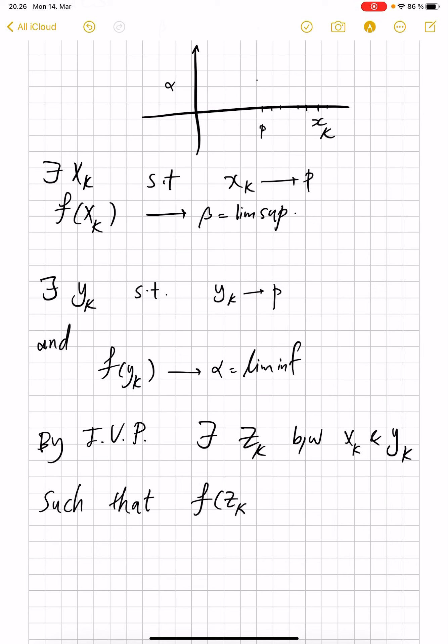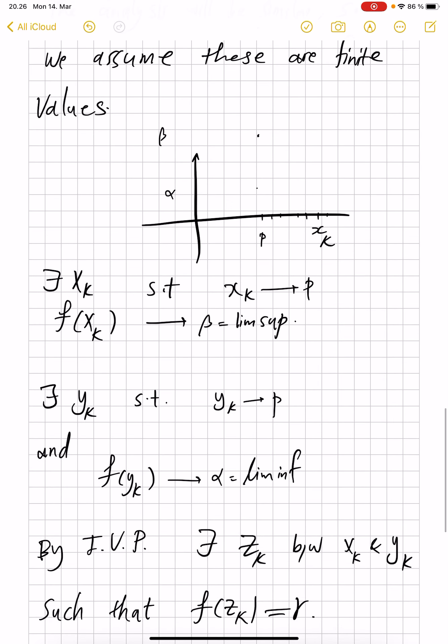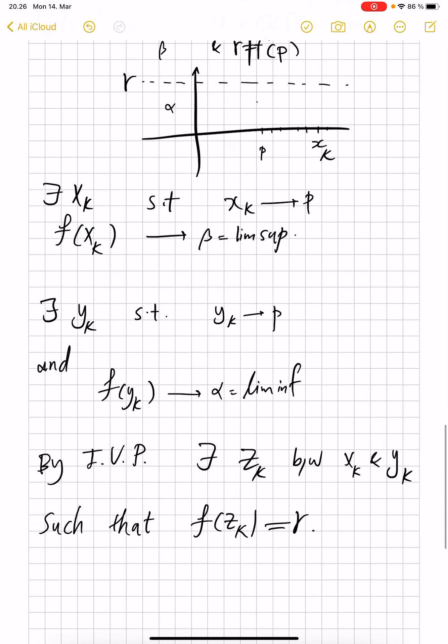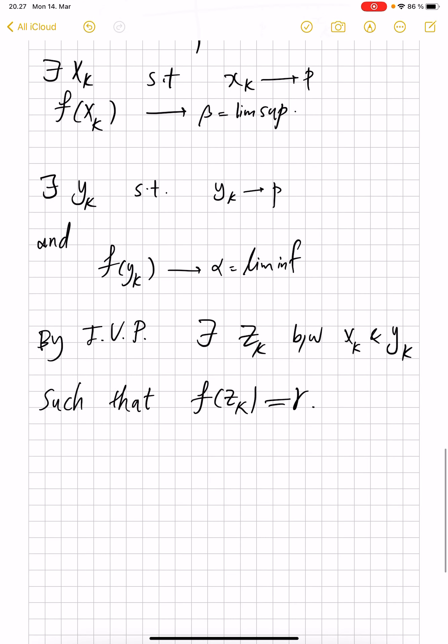f(z_k) equals r. So what is r? I should have told you that I fixed it in my mind, but not tell you. So fix r, a rational number, in the interval (α, β). And we don't want it to hit the special possible value f(p). So we kind of exclude what f(p) itself is. Just pick another rational number. We just don't like that f(p).